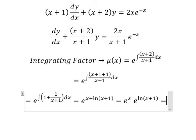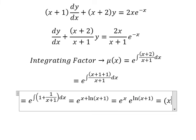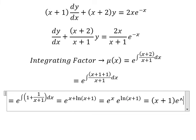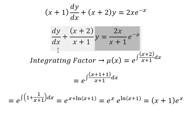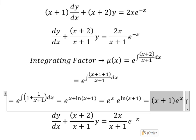So we simplify this one, and that is x plus one times e to the power of x. That means we multiply both sides by this one.